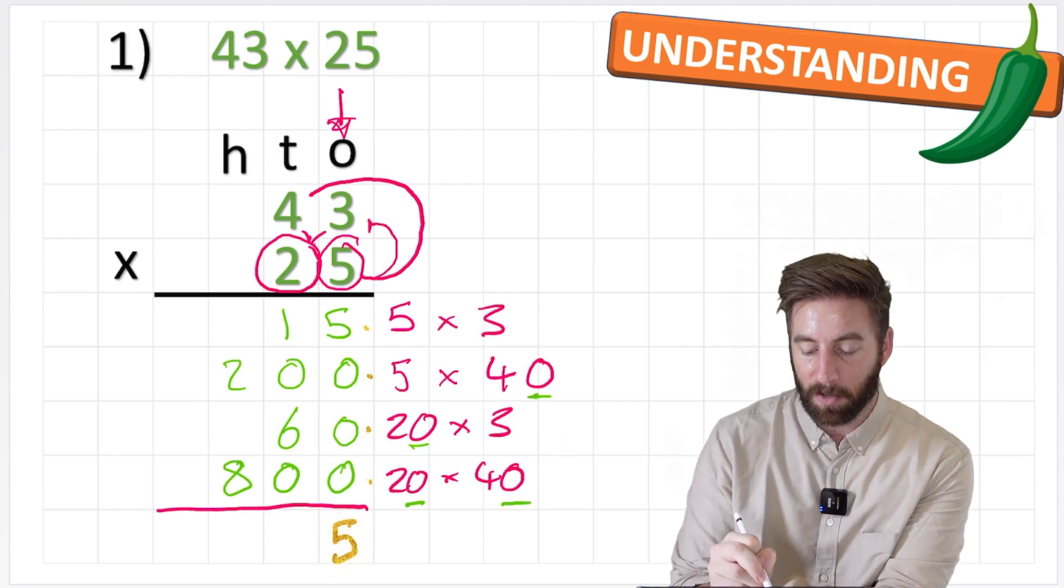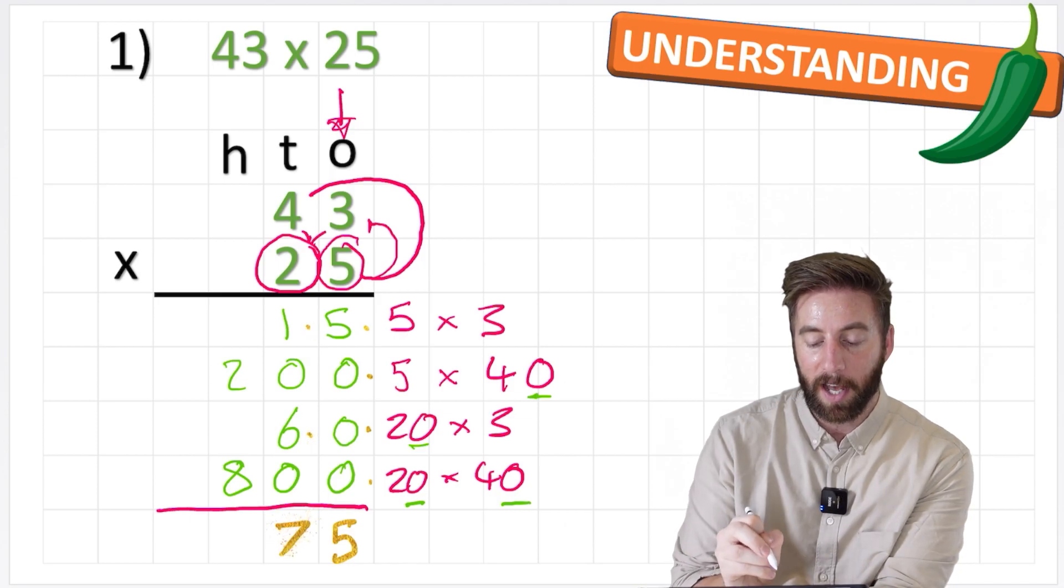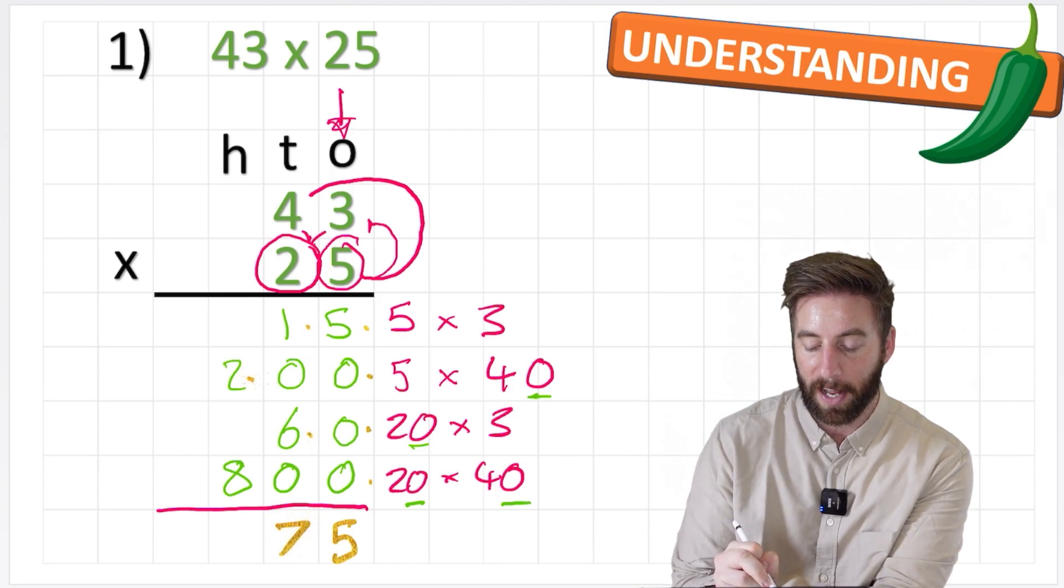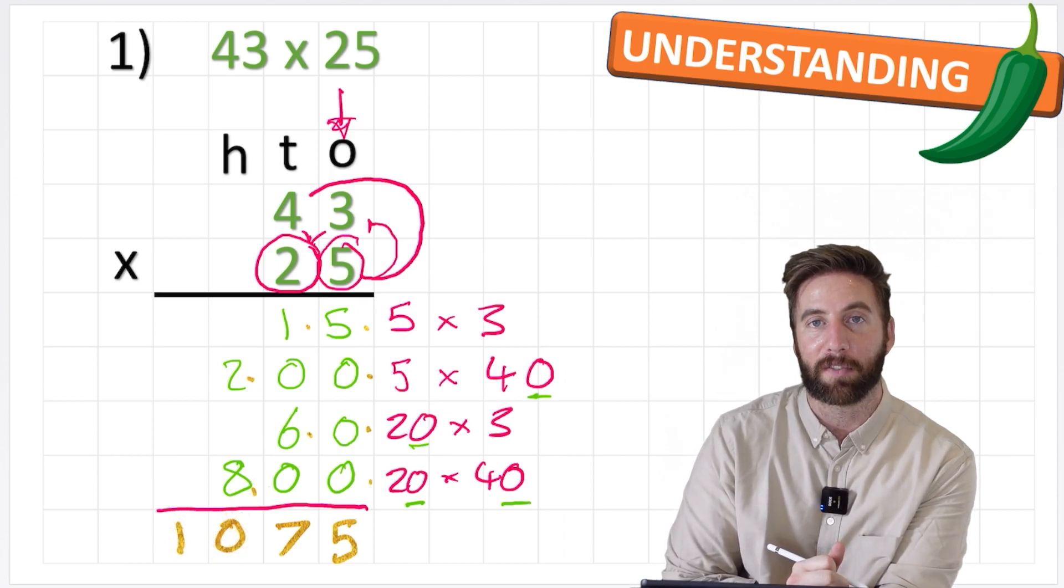And if I then look at my 10s, I've got 1 and 6. That equals 7. And in my 100s column, I've got 2 and 8. That equals 10. So my answer is 1,075.